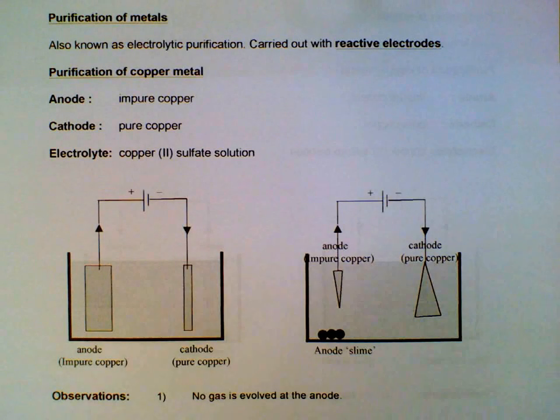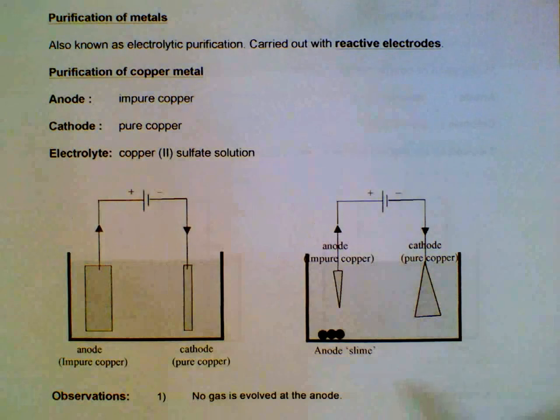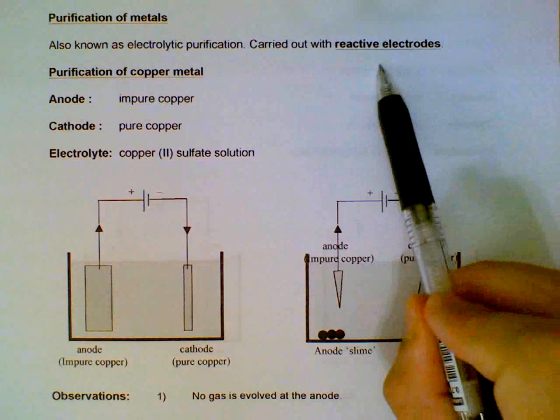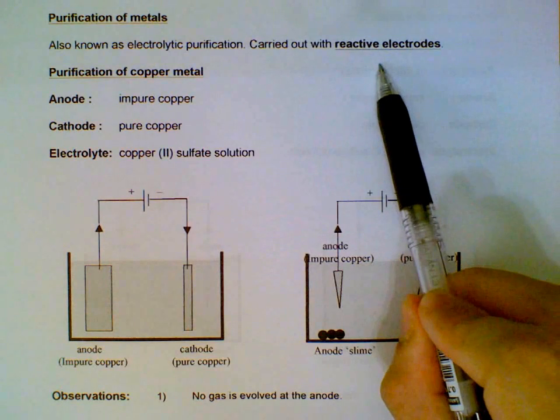In the previous few videos we have talked about electrolysis using inert electrodes, inert electrodes like graphite and platinum. So now we will move on to electrolytic processes using reactive electrodes. You will see the differences between inert and reactive electrodes soon.